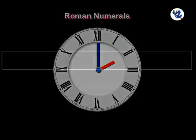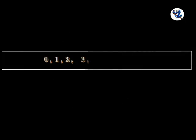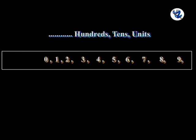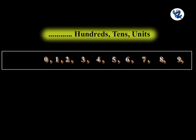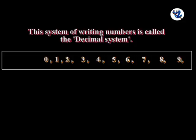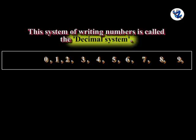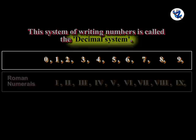Children, you have learned to write numbers using the 10 digits 0 to 9. In that system, the value of a digit depends upon its place in the number. This system of writing numbers is called the decimal system.